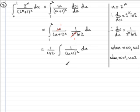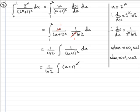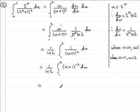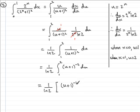So how do we integrate this? We put the 1 over natural log of 2 out front, and this becomes the integral from 1 to 2 of (u plus 1) to the power minus 2 with respect to u. Integrating by inspection, we get 1 over natural log of 2 times (u plus 1) to the power minus 1, divided by negative 1, evaluated between the limits 1 and 2.